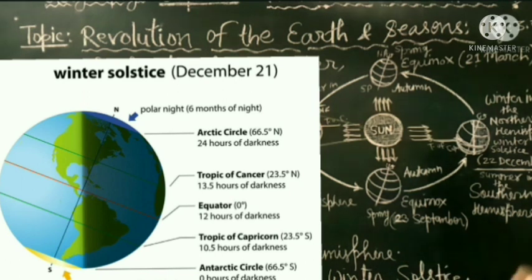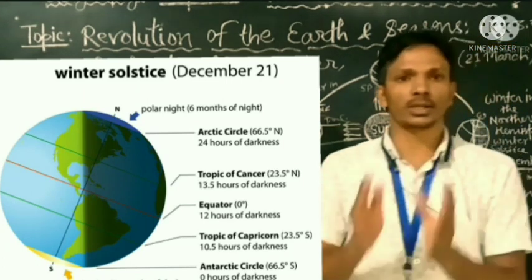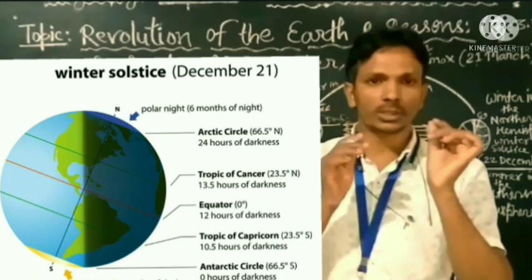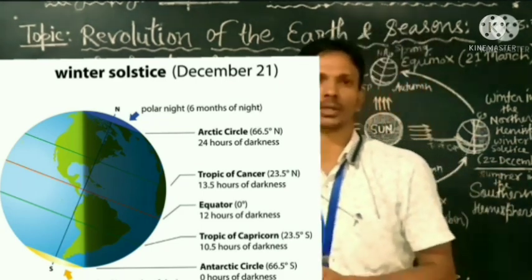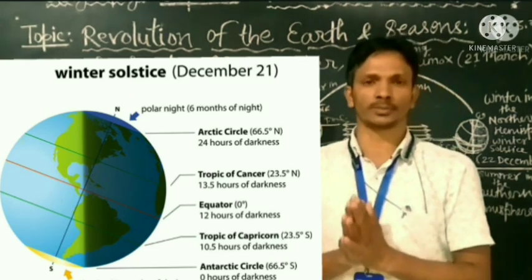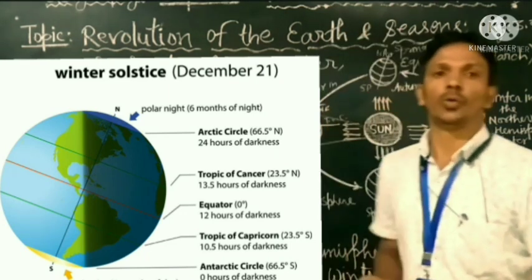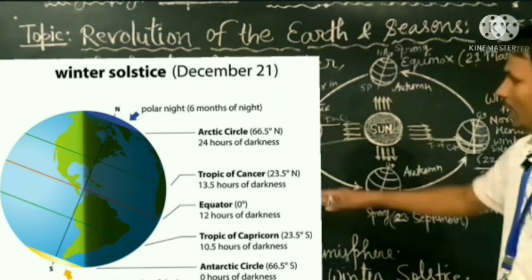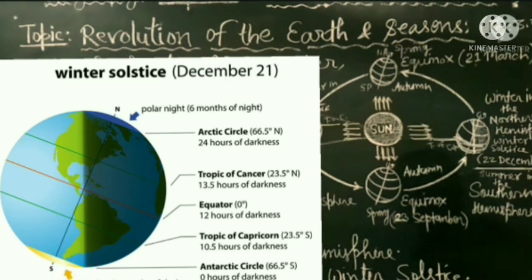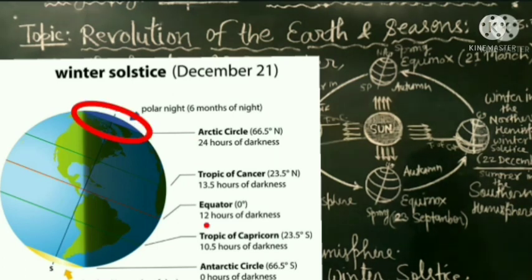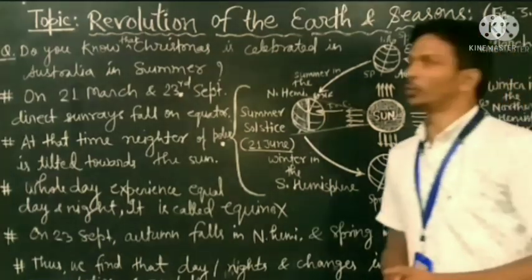The winter solstice is the condition when the inclination of the earth's tilt is maximum away from the sun for the northern hemisphere. When the earth is tilted away from the sun at its maximum point in the north, it is winter solstice. At that time, the southern pole experiences continuous daylight, while the northern hemisphere faces continuous nighttime.